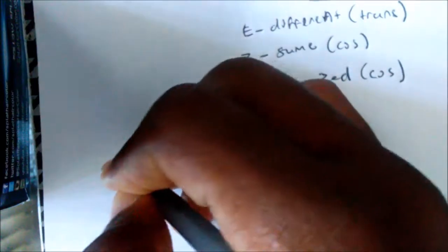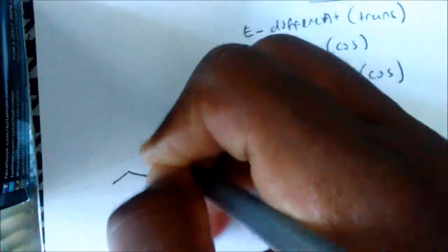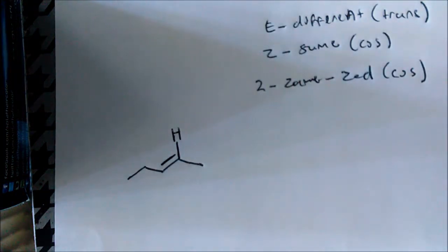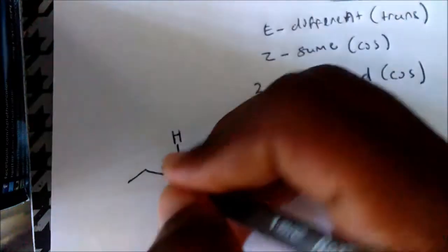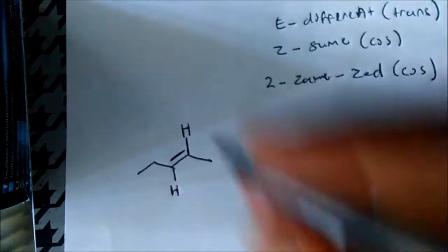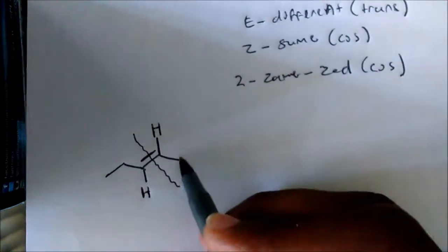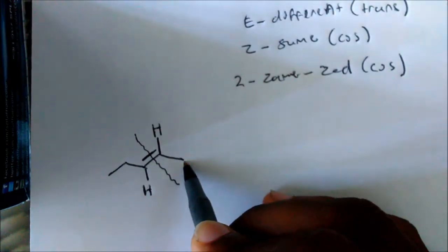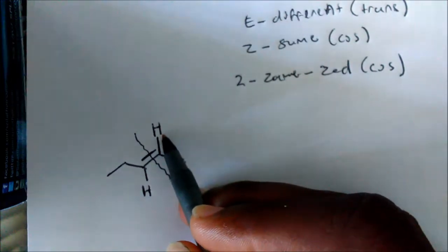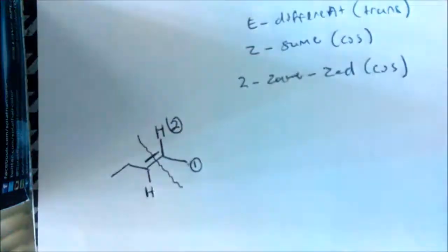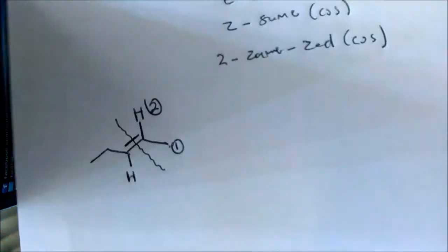Let's look at a couple examples. If you had this molecule and want to determine if it's E or Z, the first thing you want to do is cleave that carbon-carbon double bond — draw a line through it — and then assign priority groups. Here we have a CH3, so coming down this bond the first thing we hit is a carbon. Going up this bond, the first thing we hit is a hydrogen. Carbon will always beat out hydrogen, so carbon gets priority group number one, hydrogen gets priority group number two.